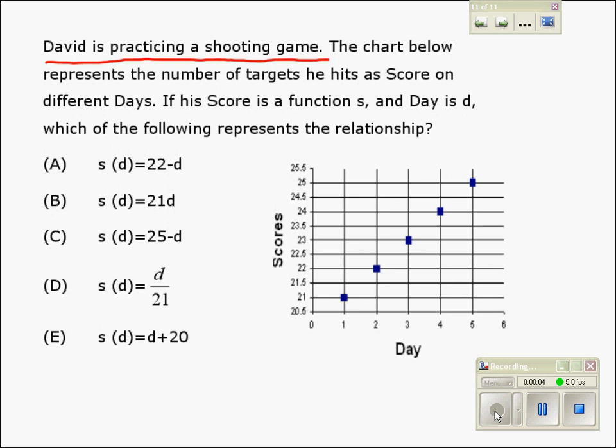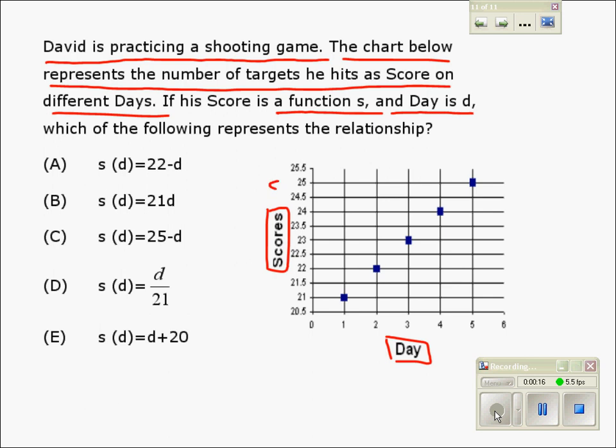David is practicing a shooting game. The chart below represents the number of targets he hits as score on different days. If his score is a function S and day is D, which of the following represents the relationship?